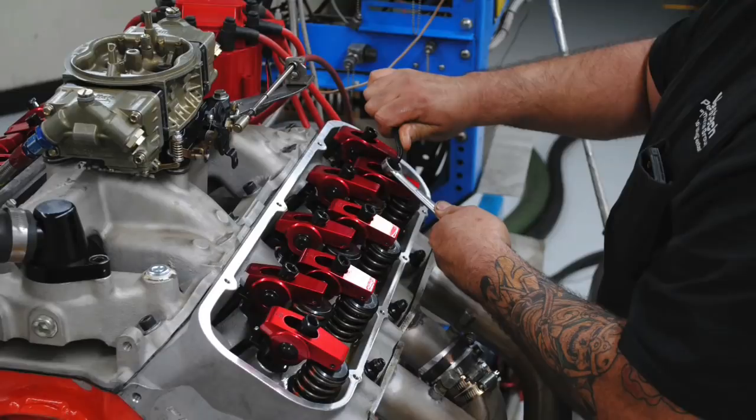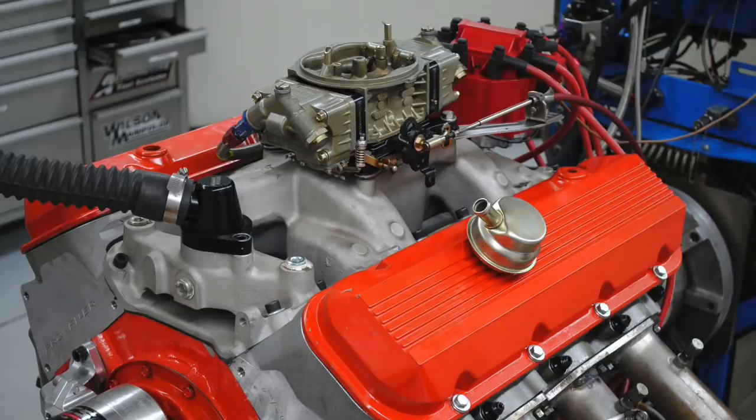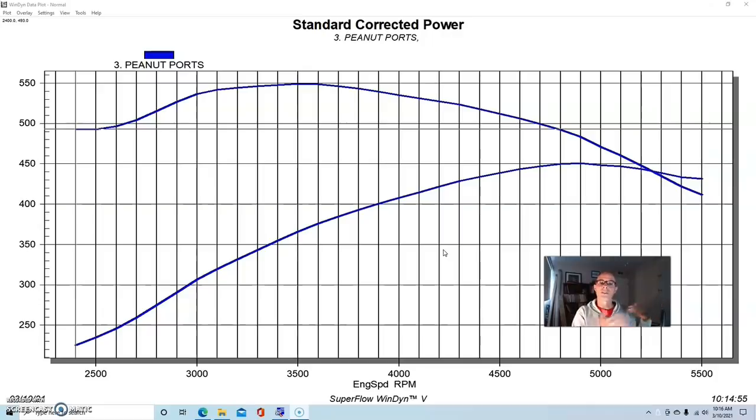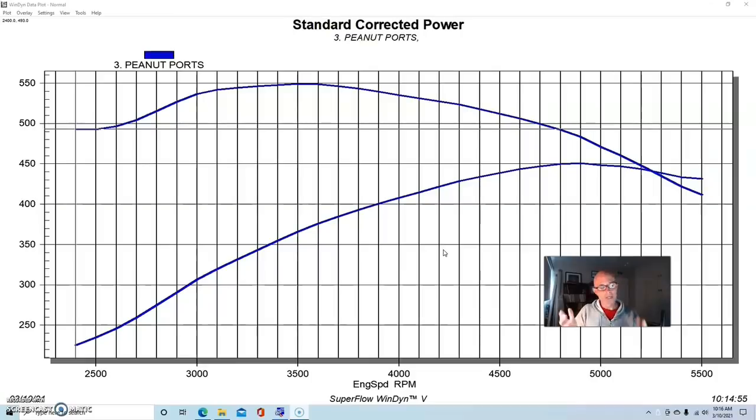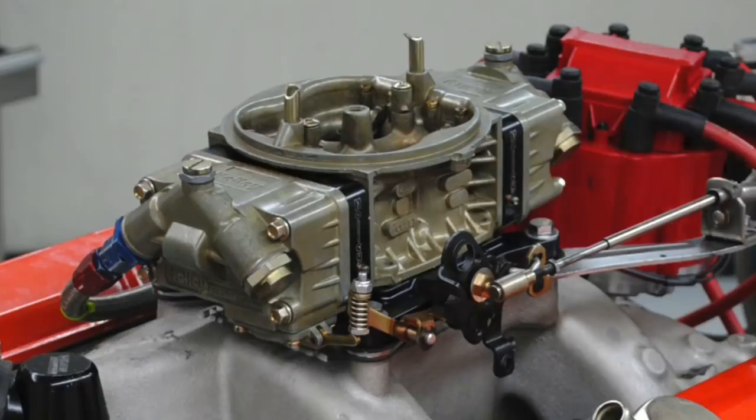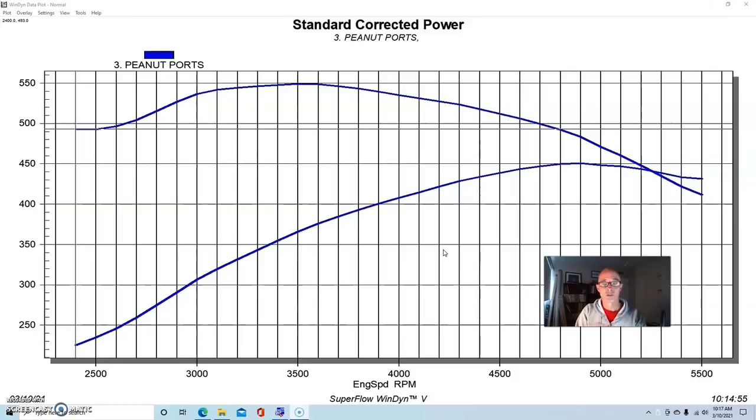We installed these Profiler heads and a set of 1.7 roller rockers. We installed a dual plane intake manifold. The change was that this Performer RPM Air Gap intake from Edelbrock was actually a rectangular port intake manifold. The reason we chose that is because it was the best match for the roval intake opening on these Profiler heads. They were neither a traditional oval nor a traditional rectangular port, but the rectangular port intake seemed to match best. We also stepped up in carburetor size from the 750 to a 950 because we knew we were going to be making more power and we did not want to restrict that with carburetor size.